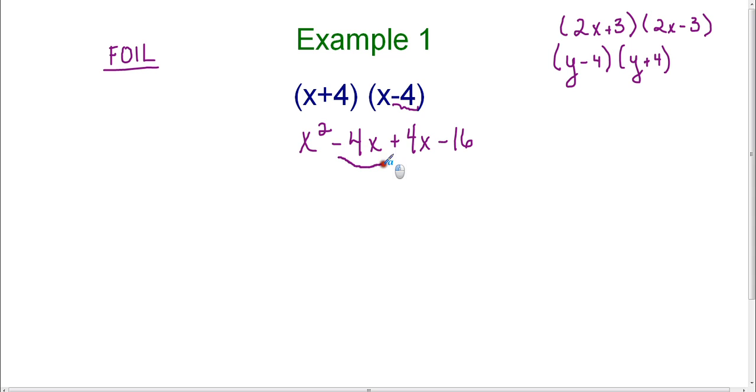So now if we combine our middle terms as we normally do with FOIL, we get x² and then this is the same as -4x + 4x, which we know is zero. It's pretty much eliminated. And then we just have -16 left. So we end up with x² - 16.